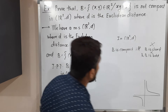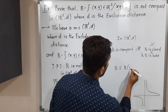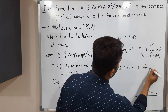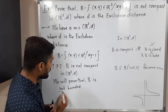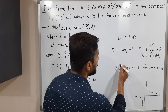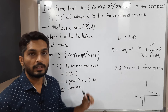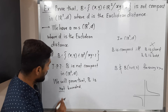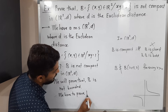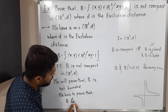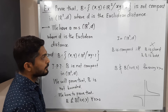To say a set is bounded, we have to prove that it is a subset of some ball with center (0,0) and radius R for some R > 0. But here we have to prove it is not bounded, meaning we have to prove that B is not a subset of any such ball for every R > 0. Therefore, we have to prove that B is not a subset of any ball with center (0,0) and radius R, for all R > 0.